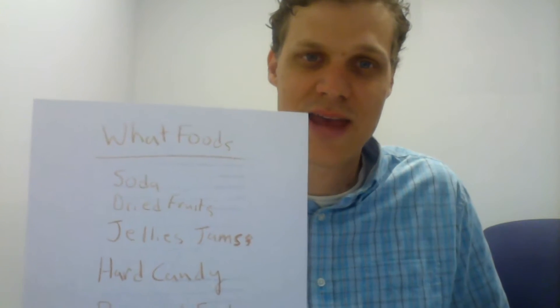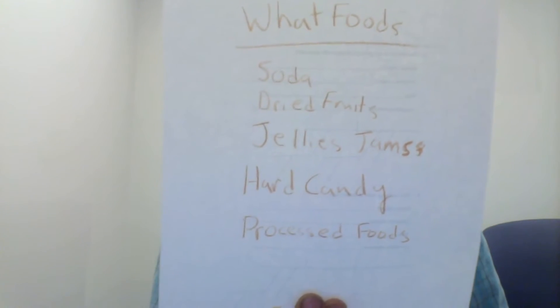So you want to avoid things like soda, dried candy, jams, and jellies. You want to avoid processed foods because they tend to get stuck in your teeth more often and they break down really quickly. They'll break down while they're still in your mouth and they can cause acidity to attack and destroy your teeth.